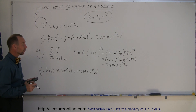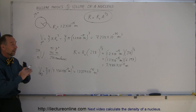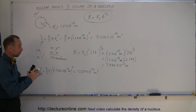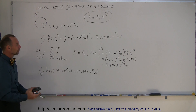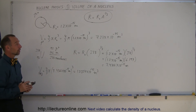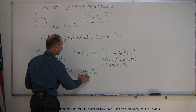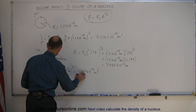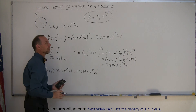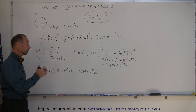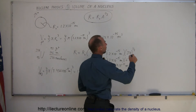So that's the volume of a uranium nucleus — just the nucleus, not the whole atom, just the nucleus. The atom is much bigger because of the orbits of the electrons. Now let's do something interesting: let's divide the volume of a uranium nucleus by the volume of a single proton. We should then get the total number of particles in the nucleus.